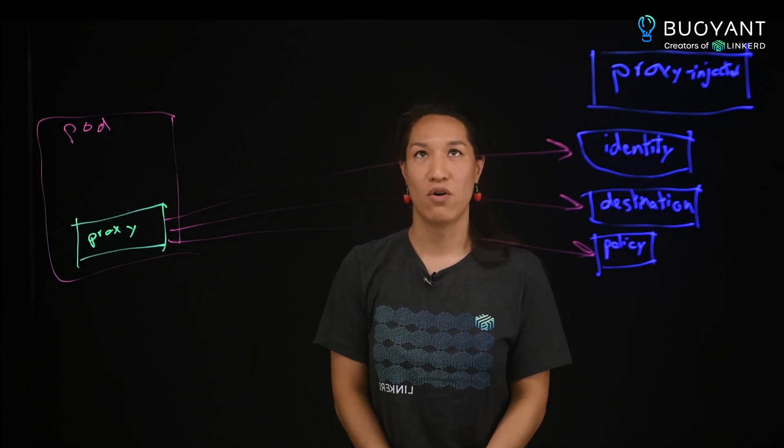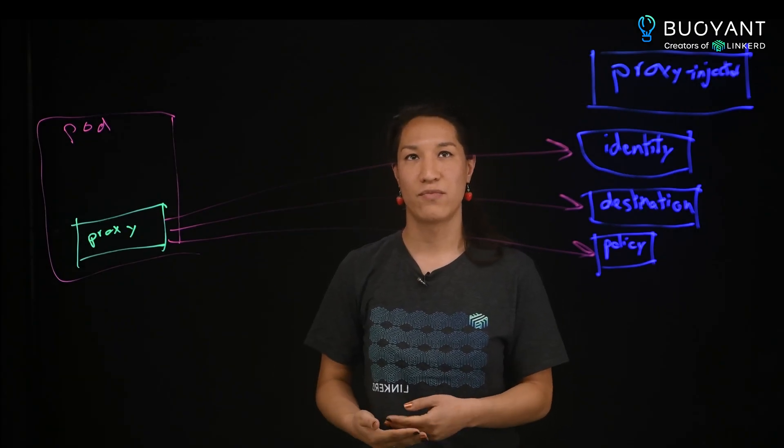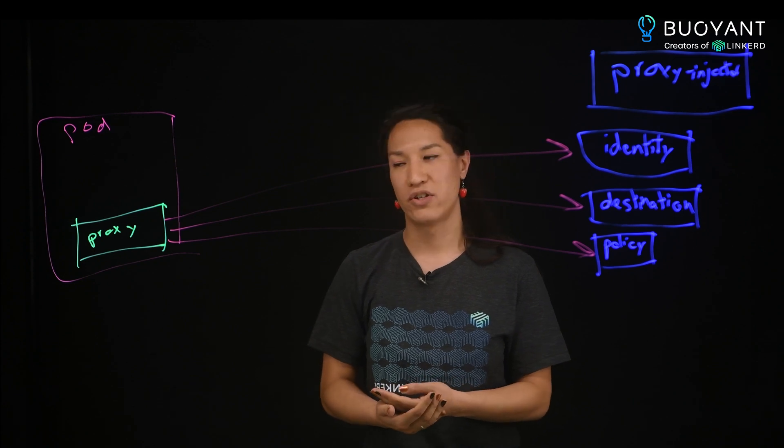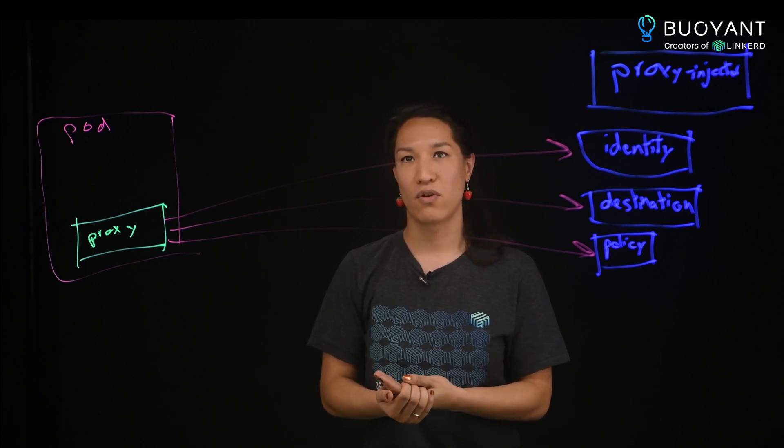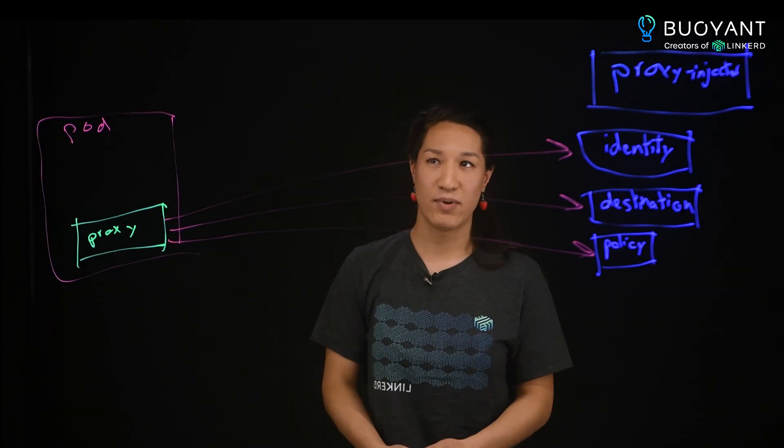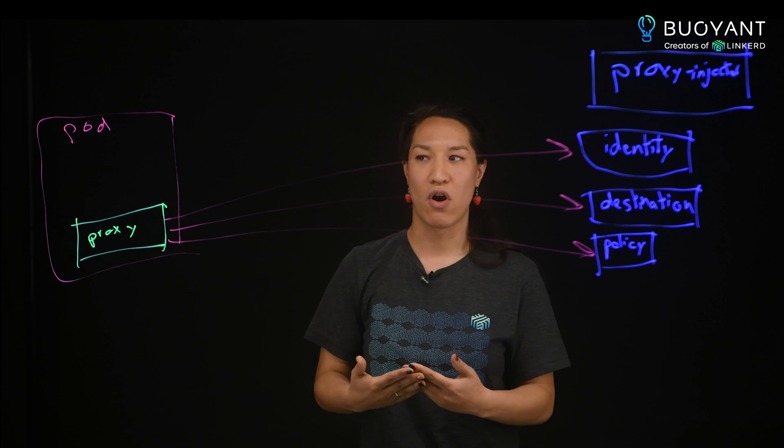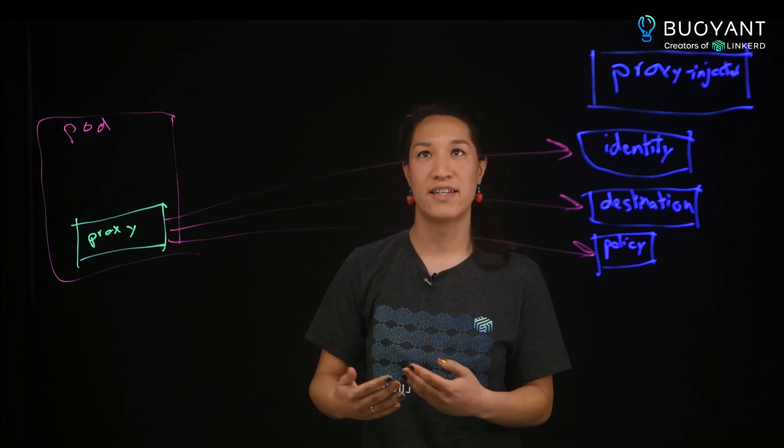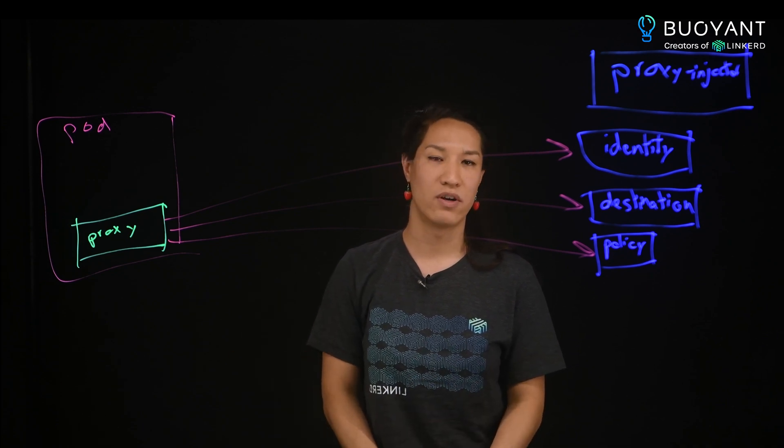This API tells the proxy what kind of policy to use on that connection, whether it should do retries, whether there should be timeouts, or what kind of protocol to use on that connection. The policy API also gives information on whether the proxy should do authorization on that connection, which identities it should allow or reject.